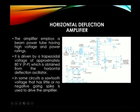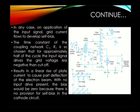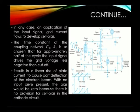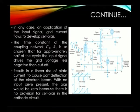The input waveform should be of trapezoidal form, though in some circuits a sawtooth type input can also be used. In some applications, the input signal grid current flows to develop self-bias. The time constant of the coupling network C1-R1 is chosen to be approximately half the cycle of the input signal, so that the grid voltage will be less negative and current will flow.